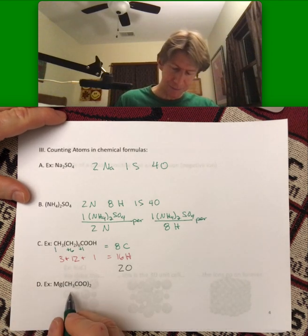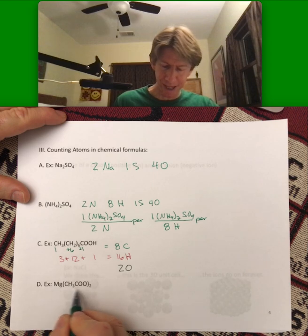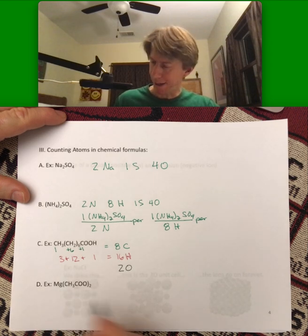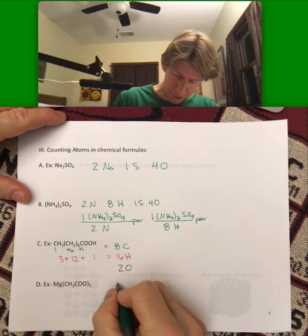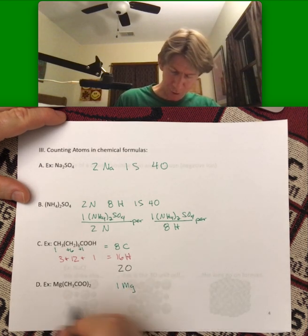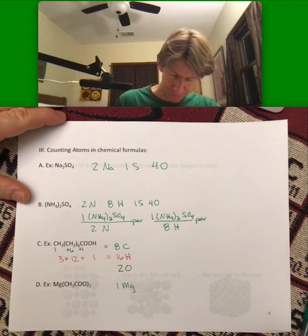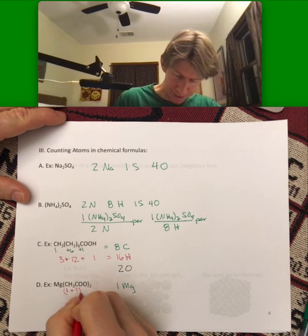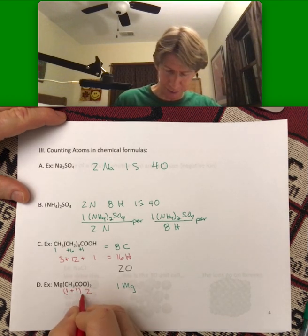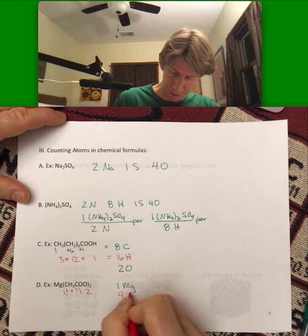And here, this one is going to be magnesium acetate. And let's go ahead and do this. We've got, well that's easy, one magnesium. We've got one plus one times two, so that's two times two, which is four carbons.